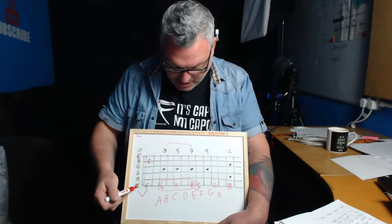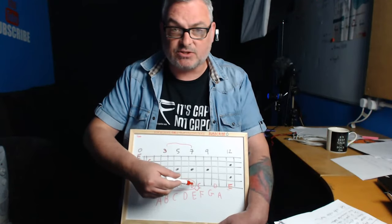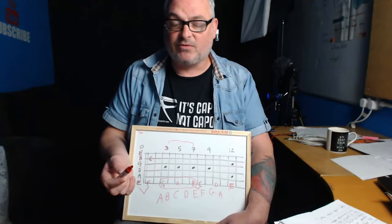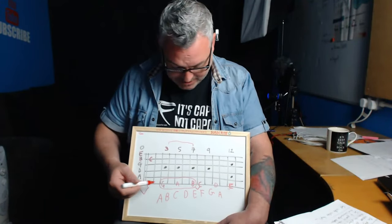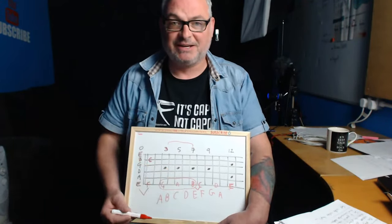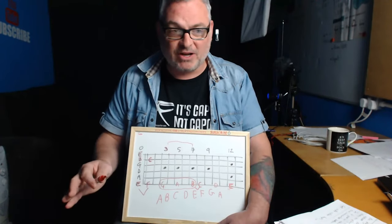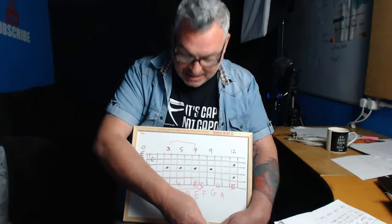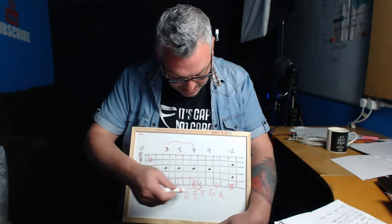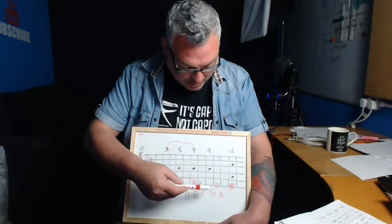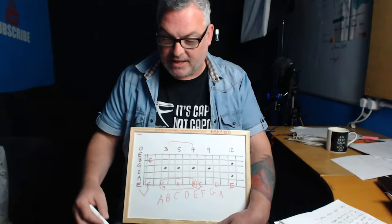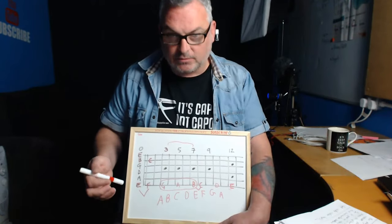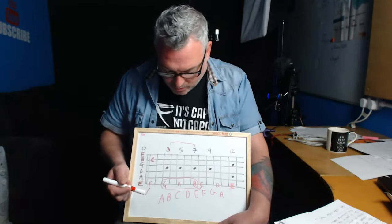To remember that E and F and B and C are next-door neighbors, you can use this mnemonic: 'How do you like your breakfast? I like my eggs fried and my bacon crispy.' Eggs Fried = E and F. Bacon Crispy = B and C. That's how the Gift of the Gab sequence works, with the lonely D at the end taking us back to E.